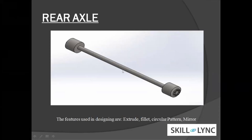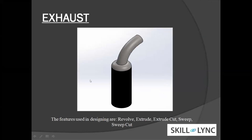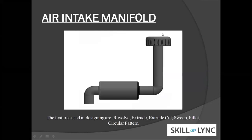There is also a rear axle. This is the exhaust, from where the flue gases from the engine are released into the atmosphere — it is located at the back of the forklift. The air intake manifold is the system through which fresh air from the atmosphere is taken into the engine.